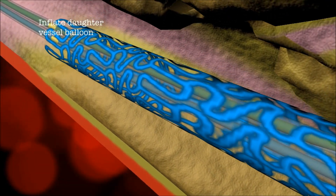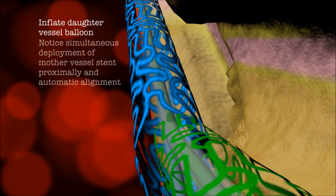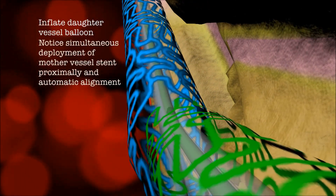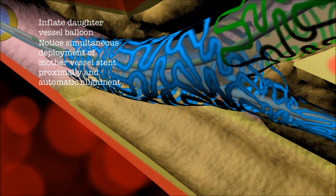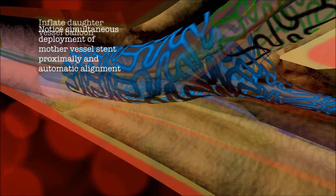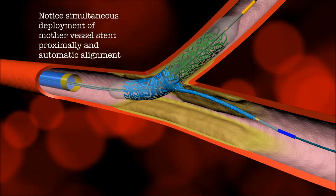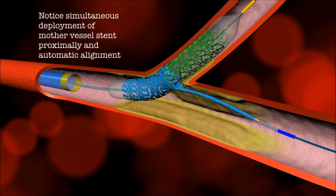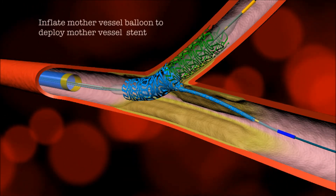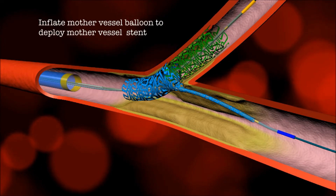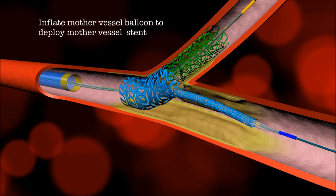The proximal segment of the mother stent is then simultaneously deployed with the daughter limb with inflation of the daughter balloon. Note perfect alignment of the stents and full tissue coverage without a gap or overlap. The mother balloon is then inflated to fully expand the mother stent.